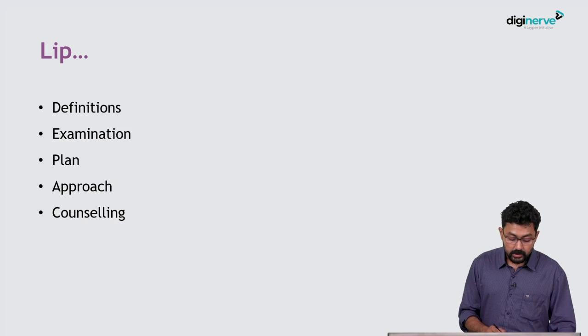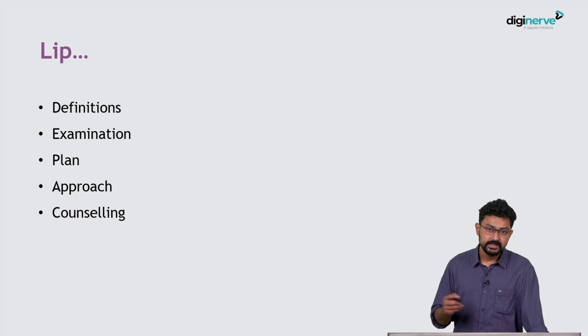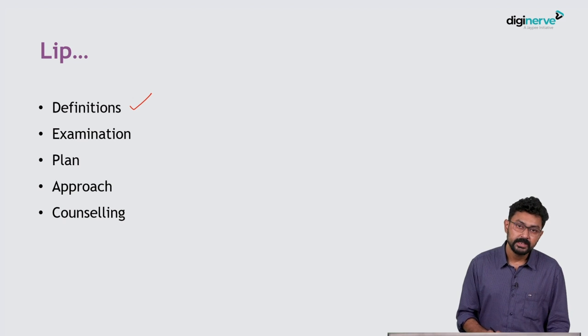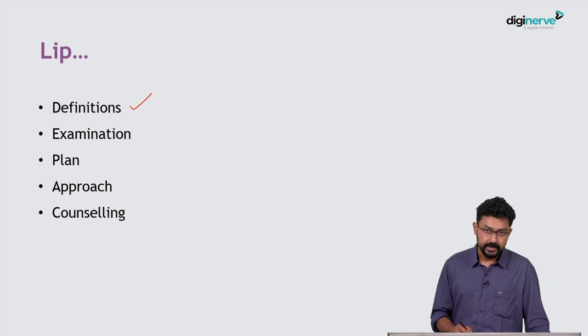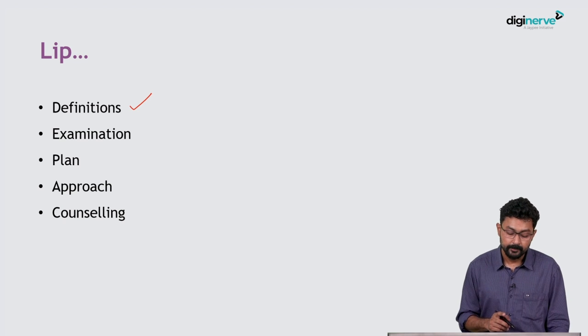Now we come to the theoretical aspects. What are the definitions? We know that there is something called an incomplete cleft lip where the lip cleft has not extended up to the nasal floor. There is something called a complete cleft lip where it is extended to the nasal floor and is extending into the palate area.